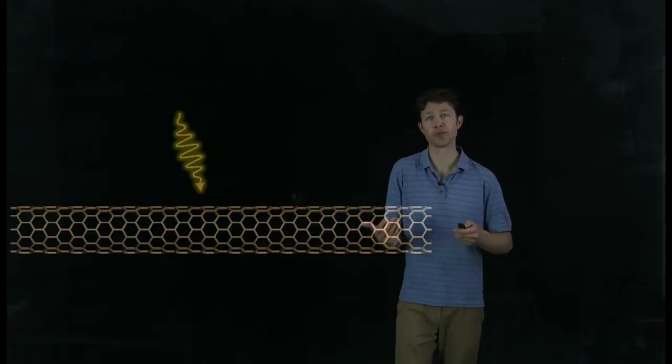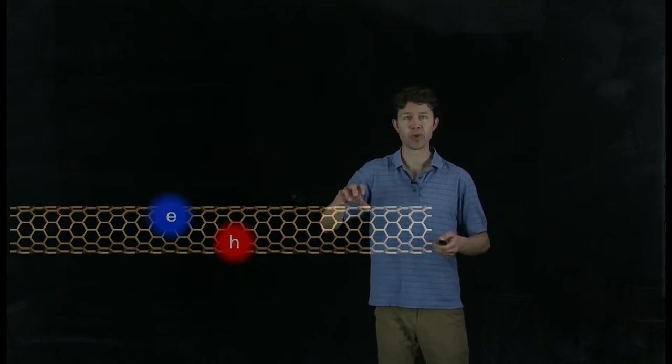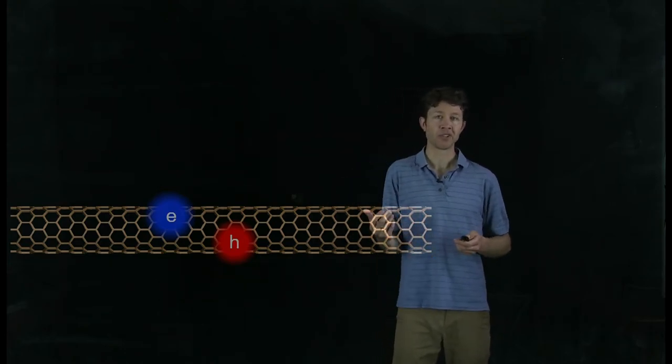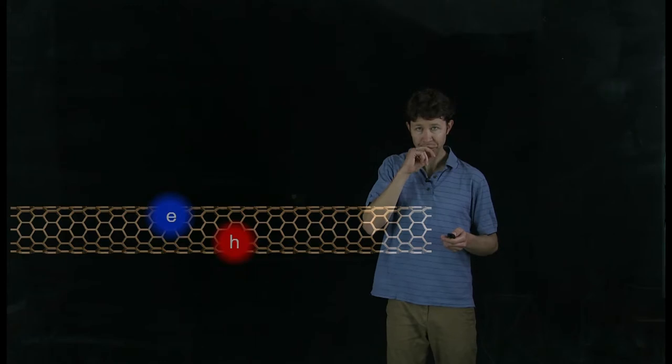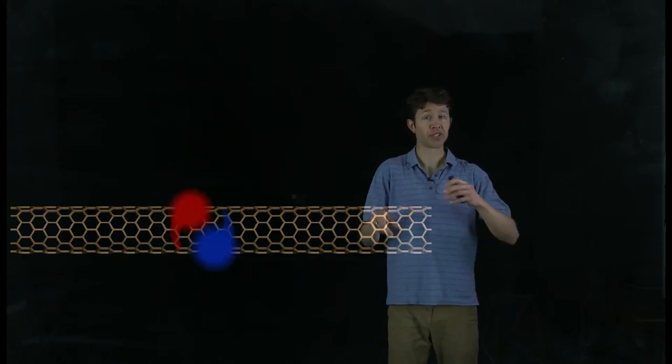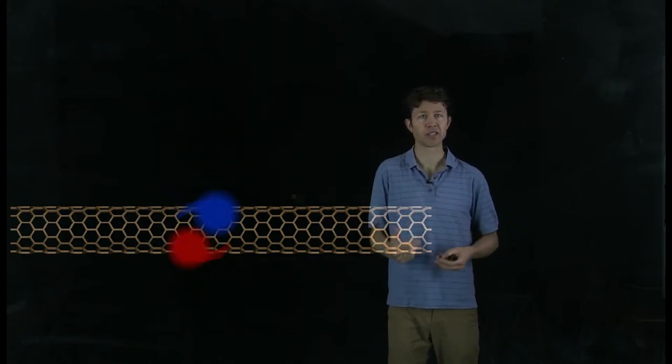It starts out the same: a photon's absorbed, an electron-hole pair are created. The electron's negatively charged, and the hole is positively charged. What often happens is they start orbiting each other, and they get stuck inside the carbon nanotube.